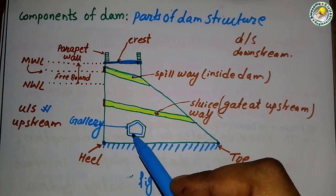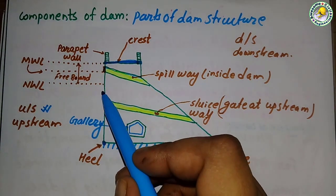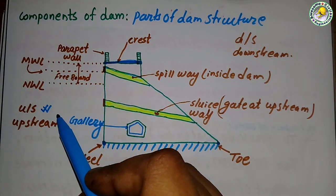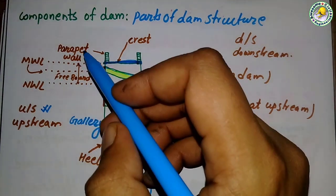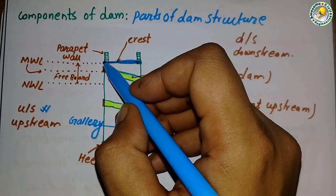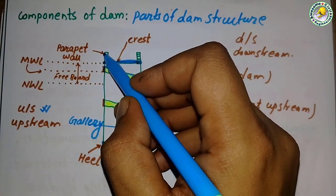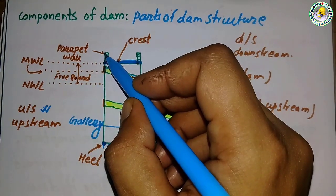The gallery may be a drainage gallery. The upstream part is shown here. At the crest level, up to one meter, the parapet wall is kept.